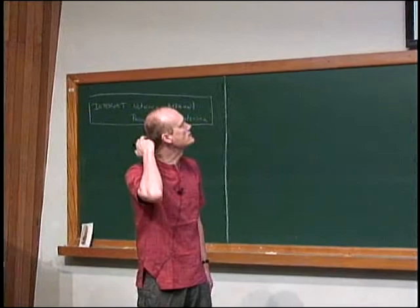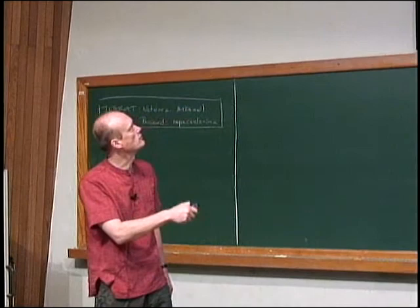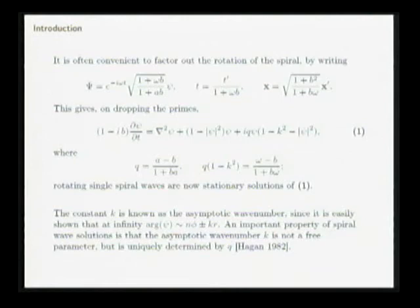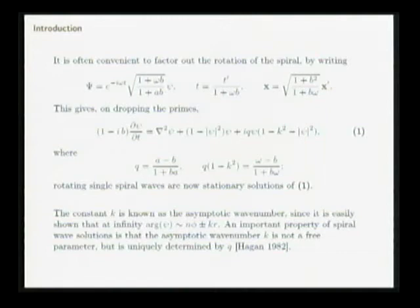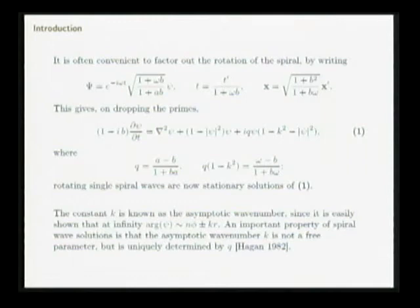This rotation of the phase and the time dependence of the solution can be inconvenient, so it's often common to factor out the rotation. If you make this transformation of variables, writing psi as e to the i omega t — factoring out the rotation of the spiral, the time dependence of the phase — and writing the equation in terms of a new lowercase psi, you also make changes of variable in x and t. Dropping the primes, defect solutions are now steady solutions to this new equation, so they're not time-dependent anymore.